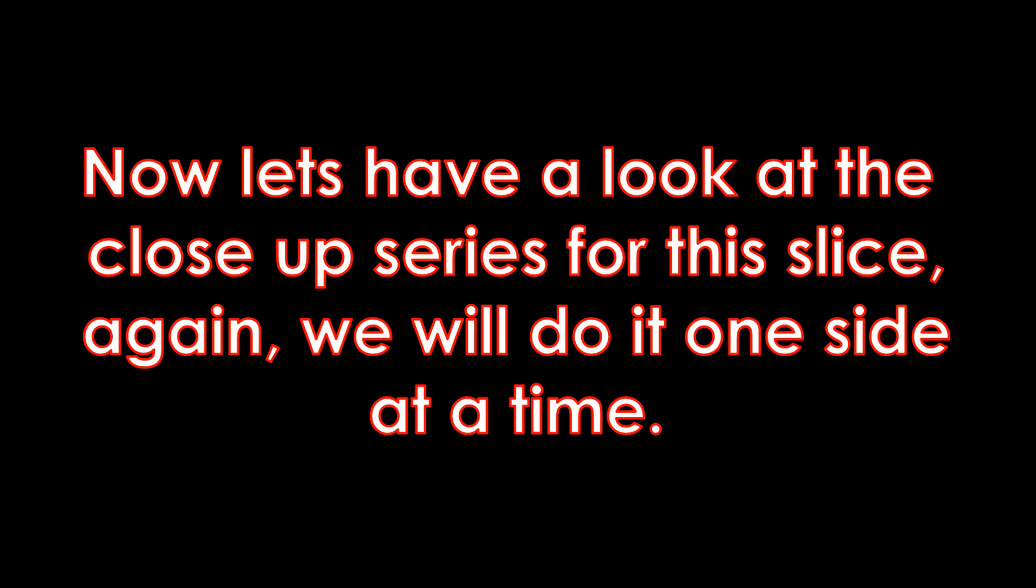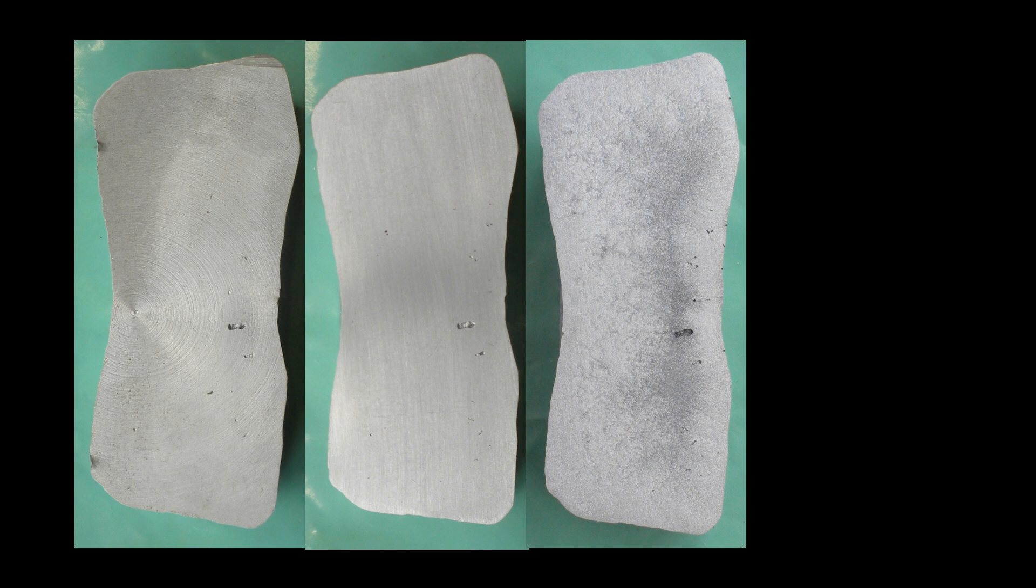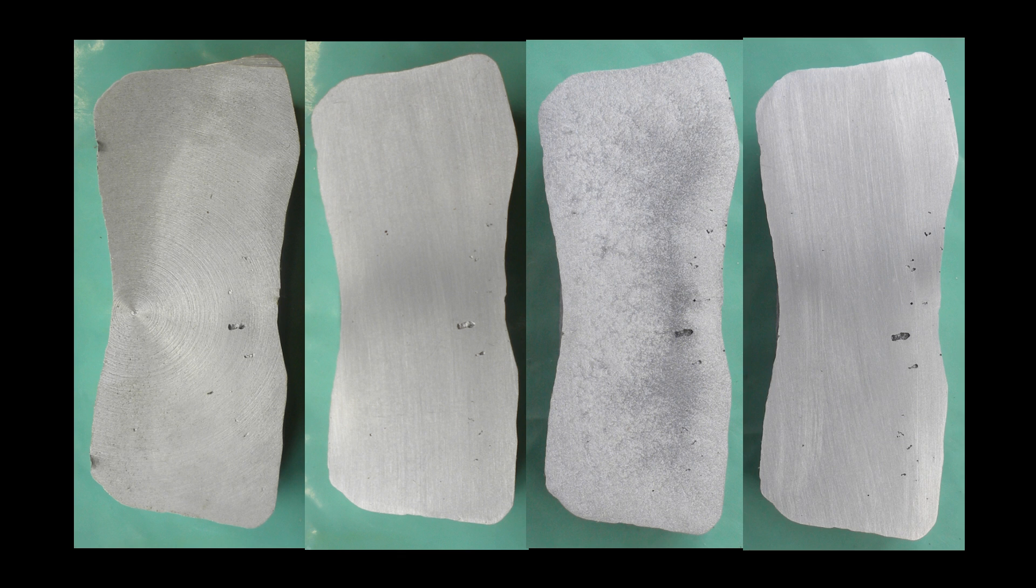Now let's have a look at the close-up series for this slice. Again we'll do it one side of the slice at a time. The first image we see here is of the machined surface. You can see some of the very coarse porosity but that's about all. Here we have the sanded surface and you can see a bit more of the porosity. Now the etched surface and again much more of the porosity shows but it's hidden by the colour of the etch. Now finally after a quick sand again we can see how much porosity there really is in that particular sample.